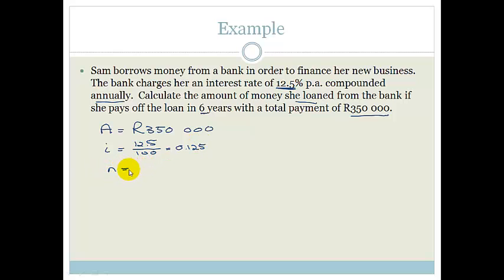The n, the number of years she paid off, was 6 years, and we want to know what did she loan. So let's do this.